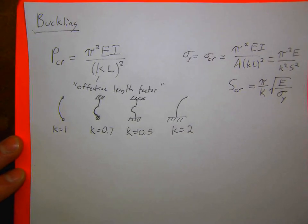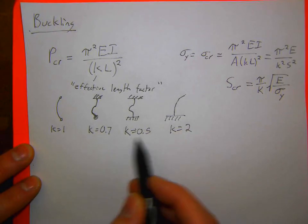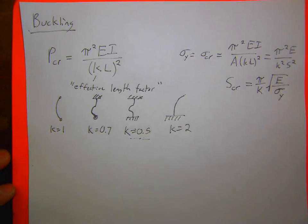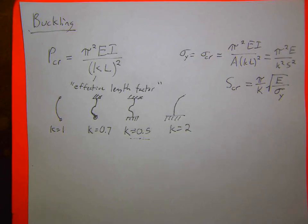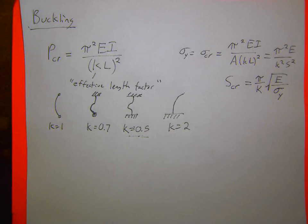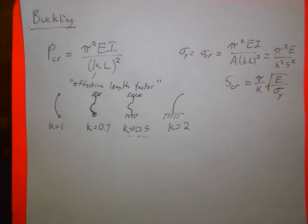You had done this in the buckling lab and looked at how the transition happens for different beams. A student asked if the effective length factors will be given on the test — the instructor said they'll tell you the boundary conditions, so you should put the K values on your note sheet. The instructor won't do anything more complicated than these four cases.